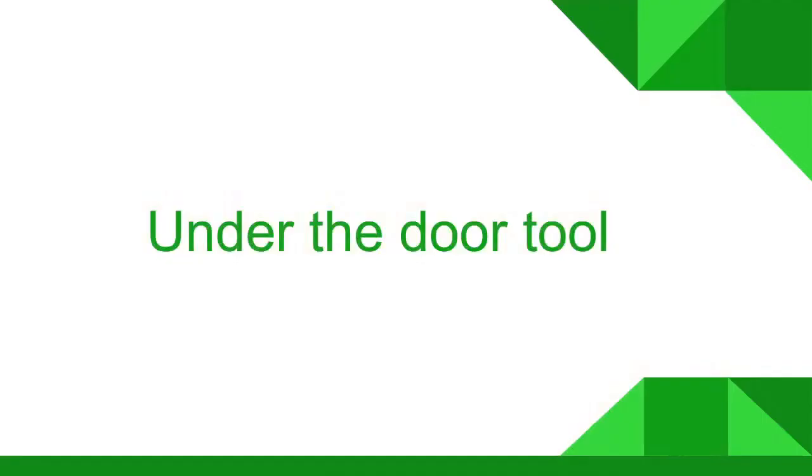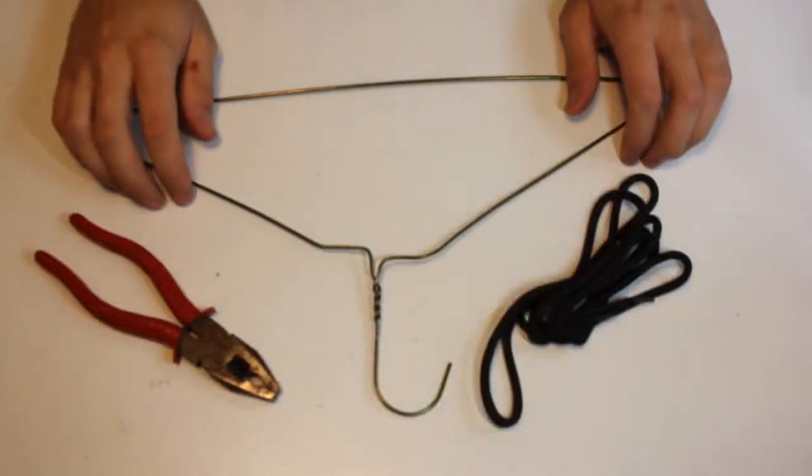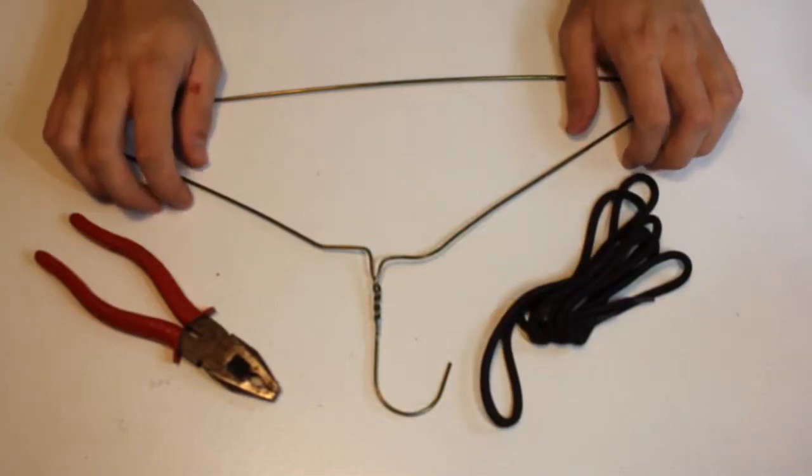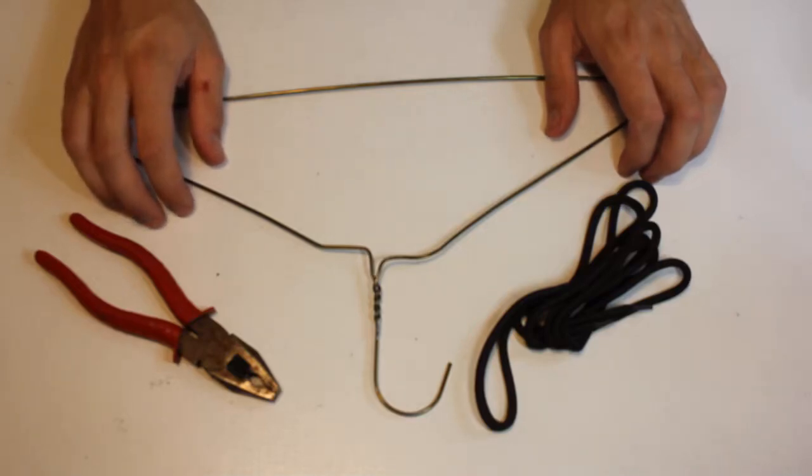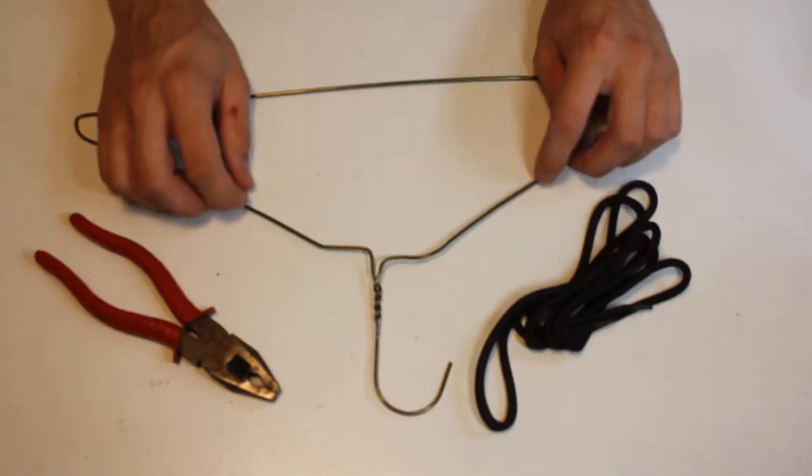Next we'll be making the under the door tool. The materials required are a coat hanger and a piece of string. You will also need a pair of pliers. So in this video, we're going to be making the under the door tool. It's very similar in purpose to the beside the door tool, with the key difference being that although both of them are trying to pull down on the handle on the other side of a door.